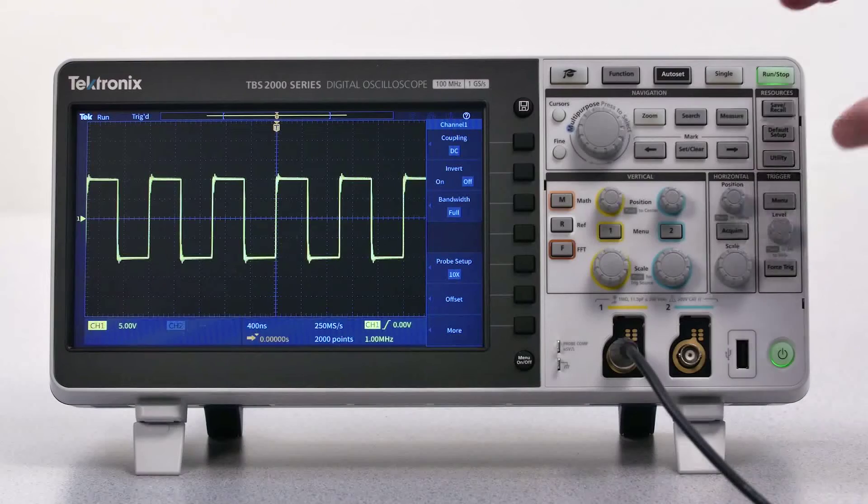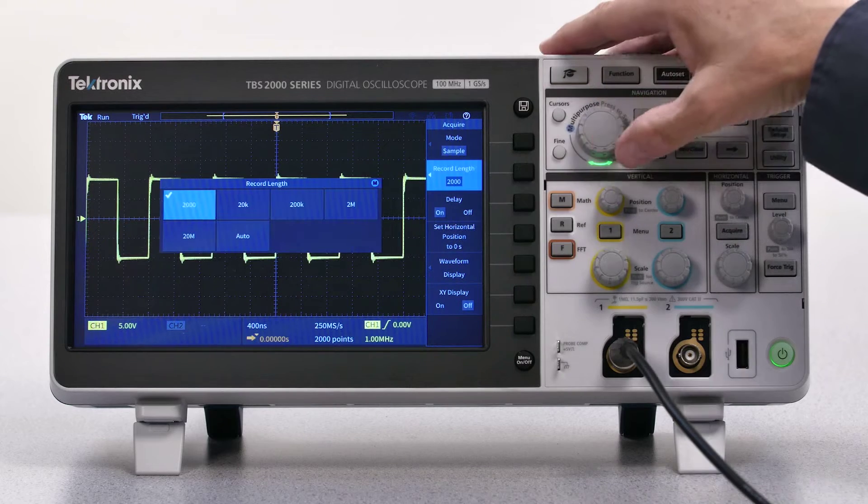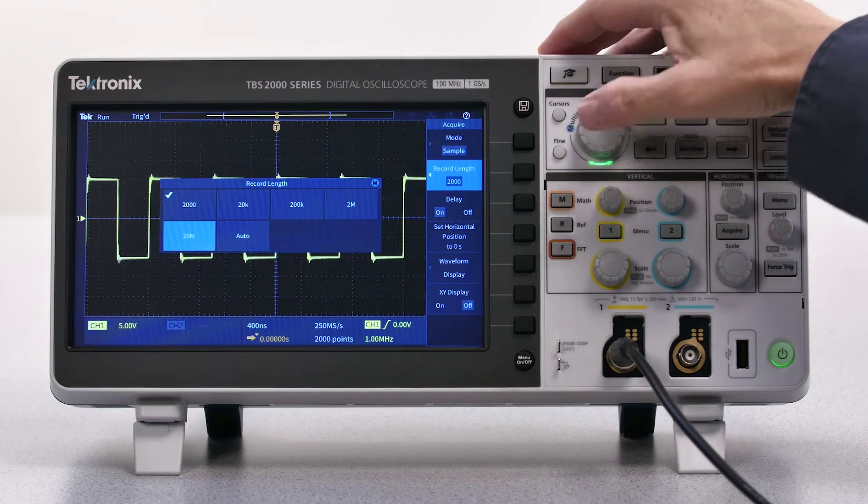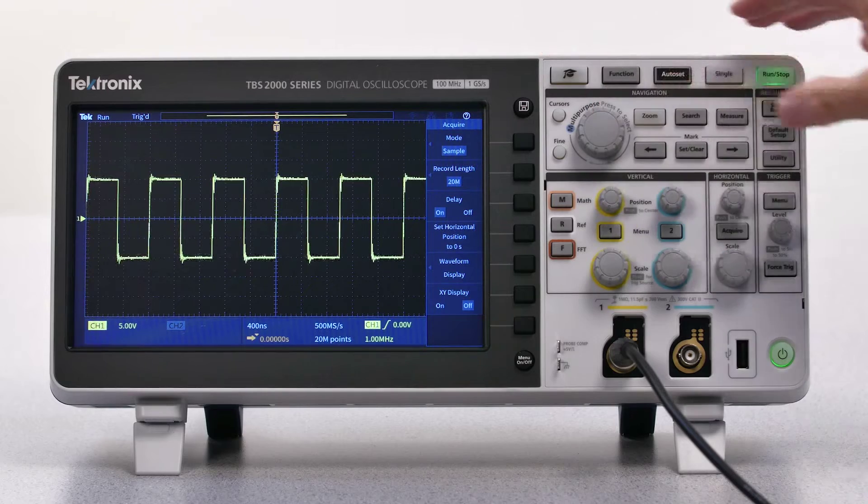Long record length, up to 20 million samples, means you can capture long time periods. It's great for capturing signal anomalies and for looking at digital communications.